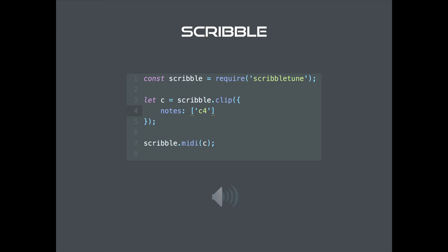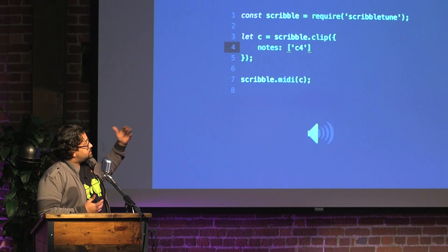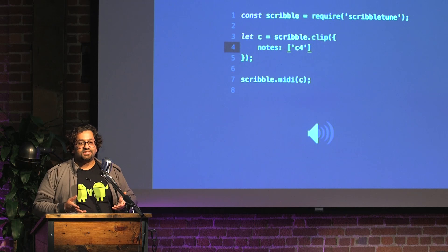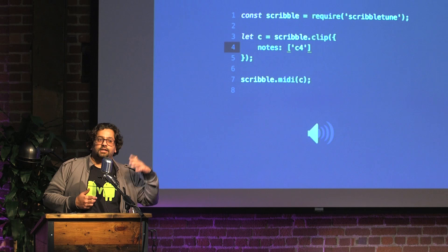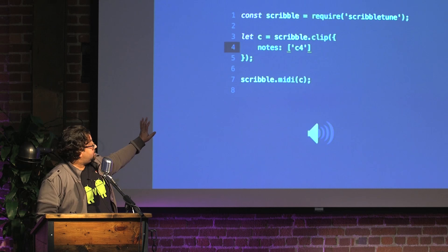Here is sample code — the smallest bit of code you'll write when making music with ScribbleTune. The first line is pretty self-explanatory; you've written something like it at least 100 times before. The next line introduces the first method, `scribble.clip`, which we're putting in a variable called `c`. The clip method takes one object as its argument, and that object lets you add parameters. In this case we're adding the `notes` parameter — it's an array with just one note right now: `C4`, the C note on the fourth octave.